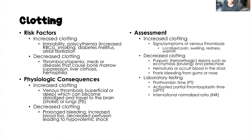For decreased clotting, we're going to see purpuric lesions — hemorrhagic lesions — such as ecchymosis (bruising) or petechia. We might also have blood in the urine (hematuria), occult blood or frank bleeding from the stool, or frank bleeding from the gums or the nose. All of those are signs of a decreased ability to clot.